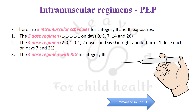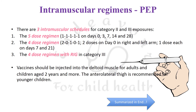The four-dose regimen is to be used with rabies immunoglobulin in category three exposure. Vaccines should be injected into the deltoid muscle for adults; for children aged less than two years, the anterolateral thigh is the recommended site. Vaccine should never be injected into the gluteal region.